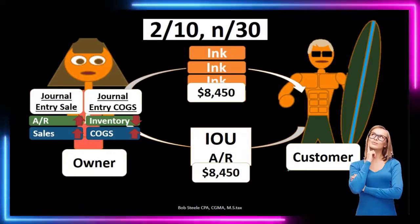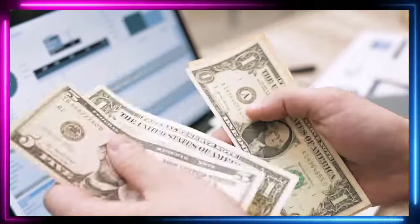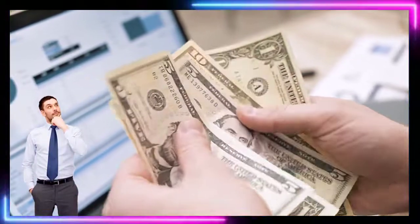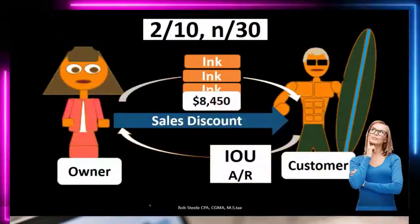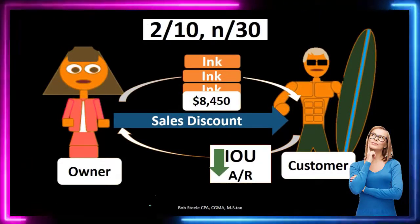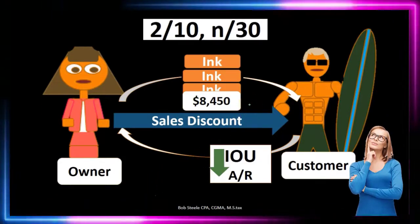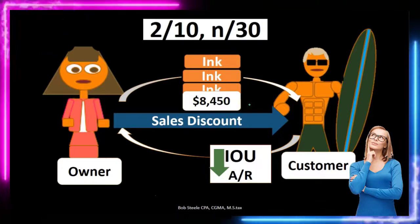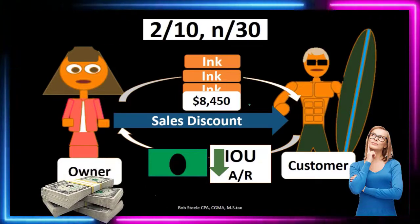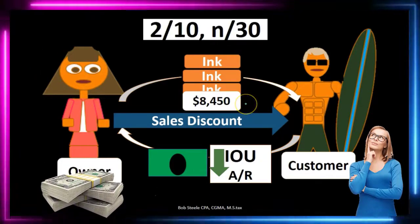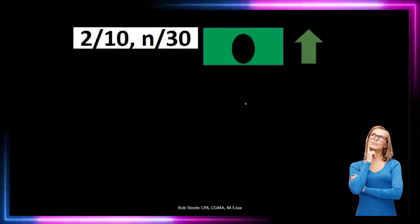It's possible for the customer to pay less than $8,450 if payment is received within 10 days. If the customer pays within 10 days, the owner gives the discount. The impact is that the IOU goes down — the customer would not owe the entire $8,450 on our books as a receivable — so the cash we ultimately receive as the owner would be less than $8,450. Net income will also go down.